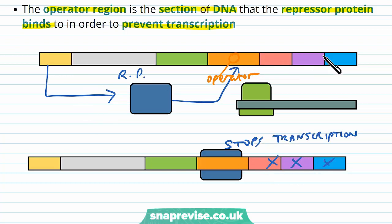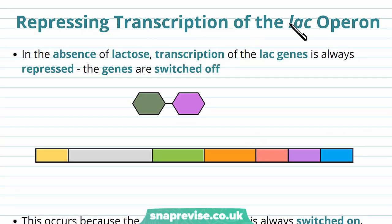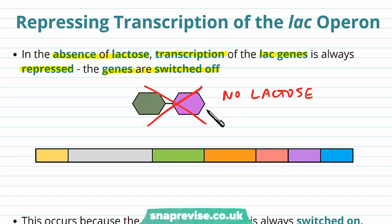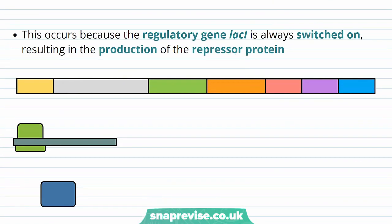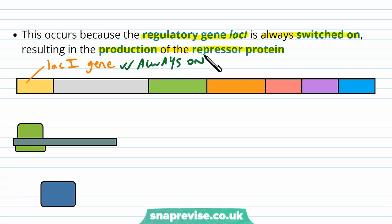Now that we know what each of these regions do, let's talk about how the lac operon is switched on or off. First, how we repress the transcription — how we keep it turned off. In the absence of lactose, for example if there's plenty of glucose, the transcription of the lac genes is always repressed. In this environment with no lactose, the cell doesn't want to make the enzymes which metabolize lactose — this would be a waste of resources. The reason the genes are constantly off is because the regulatory gene lac I is always switched on, so the production of the repressor protein is basically happening all the time.